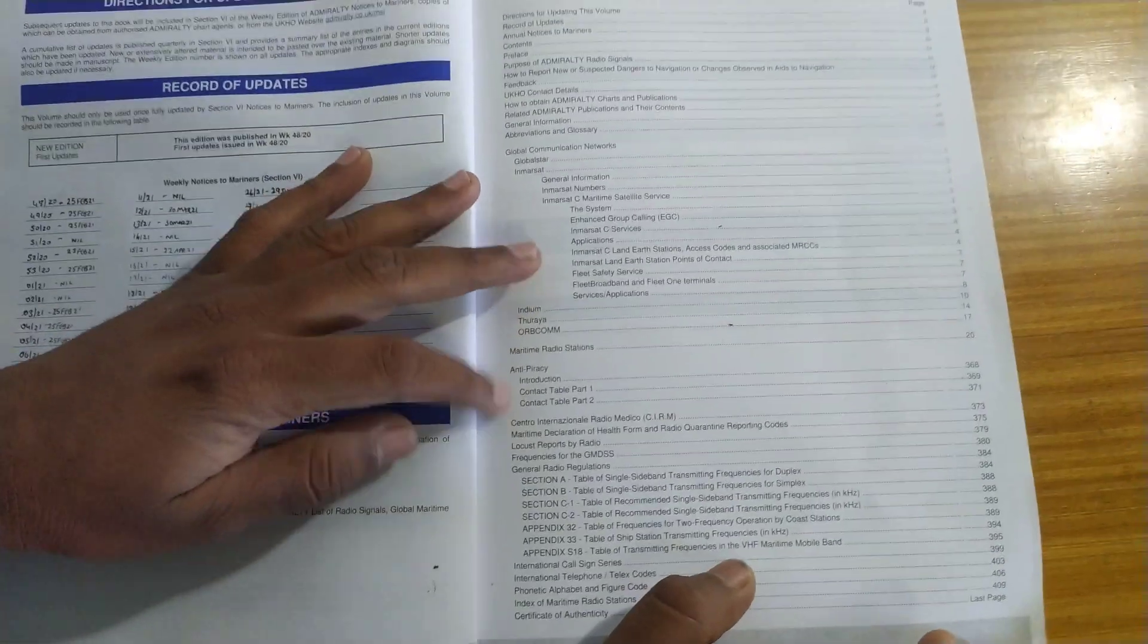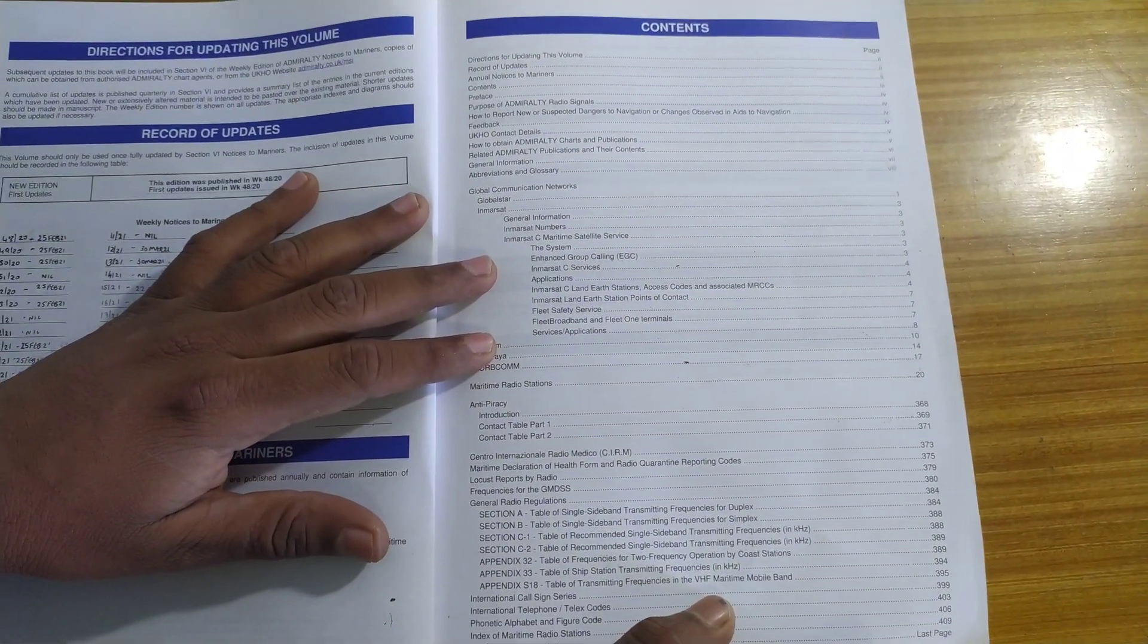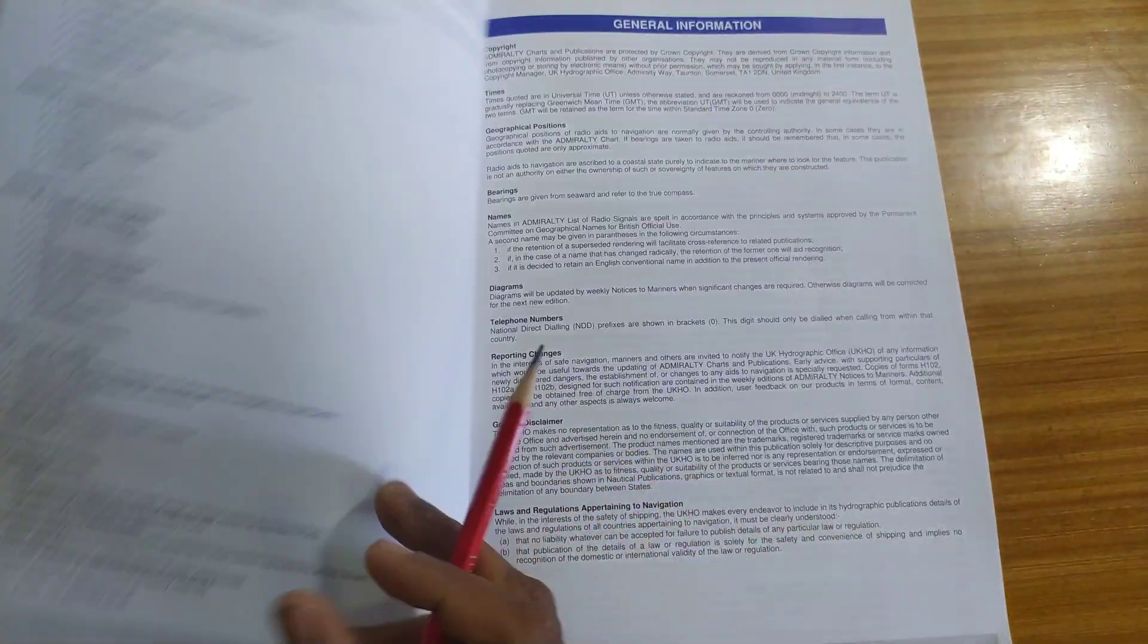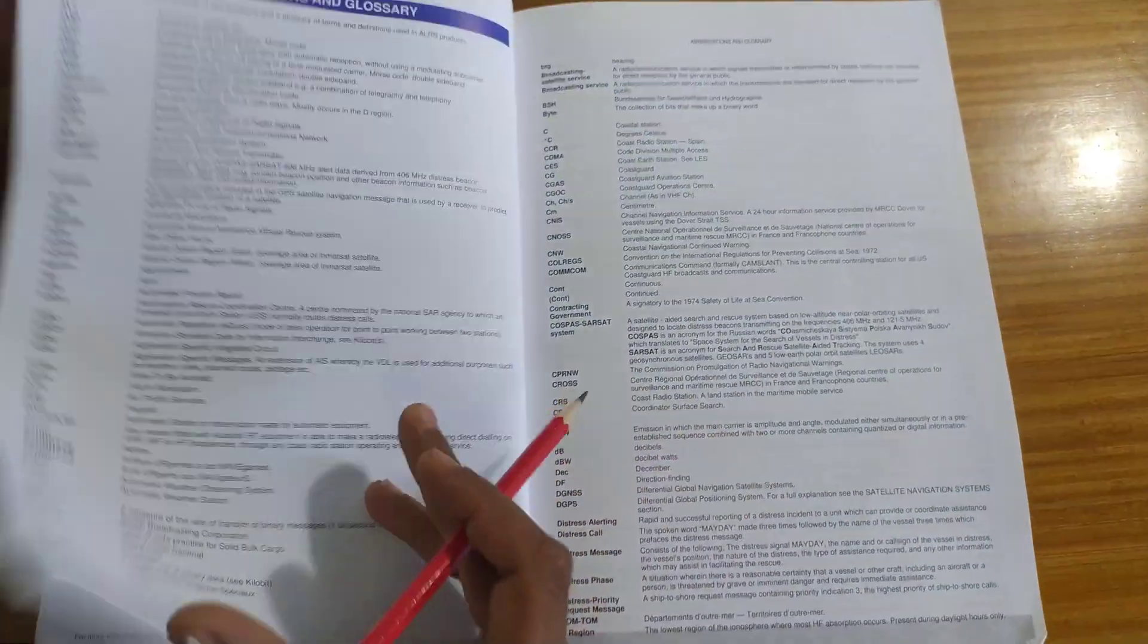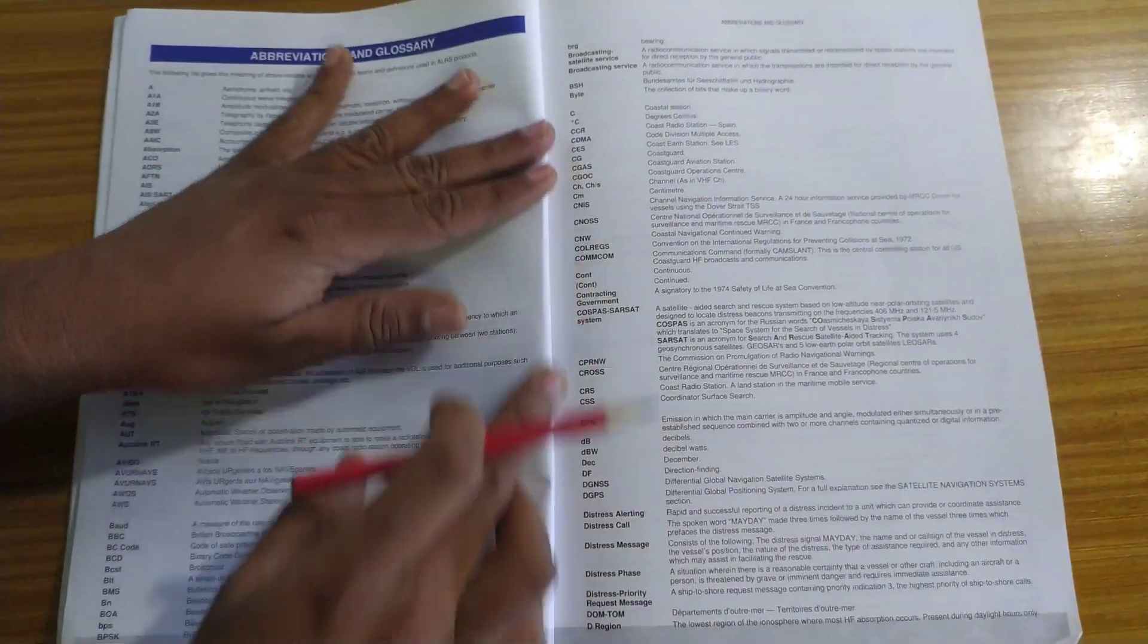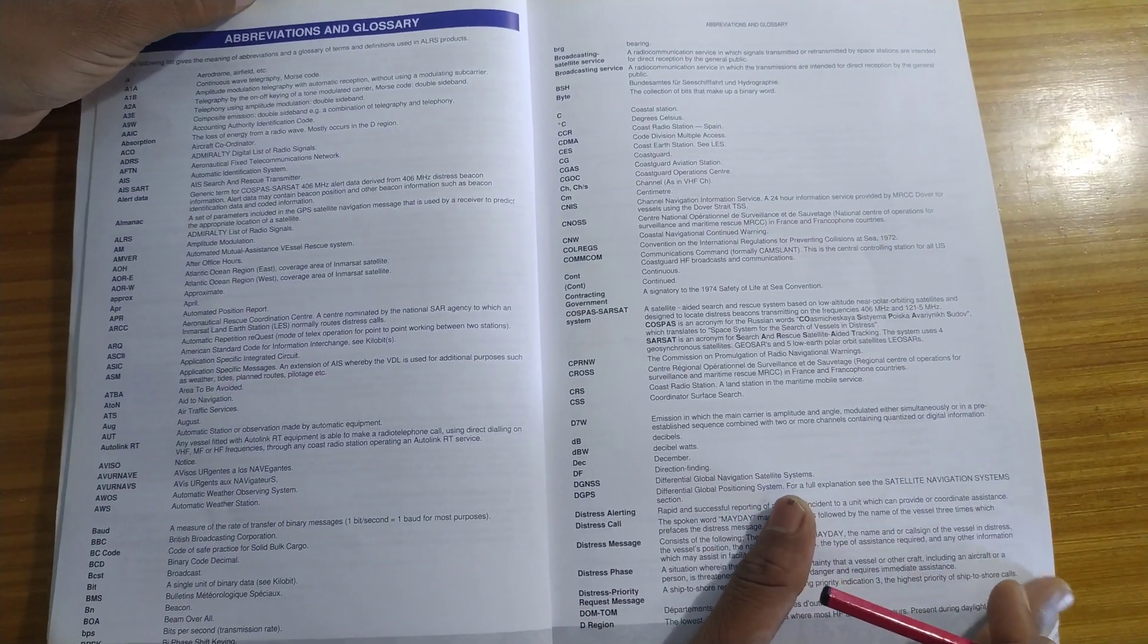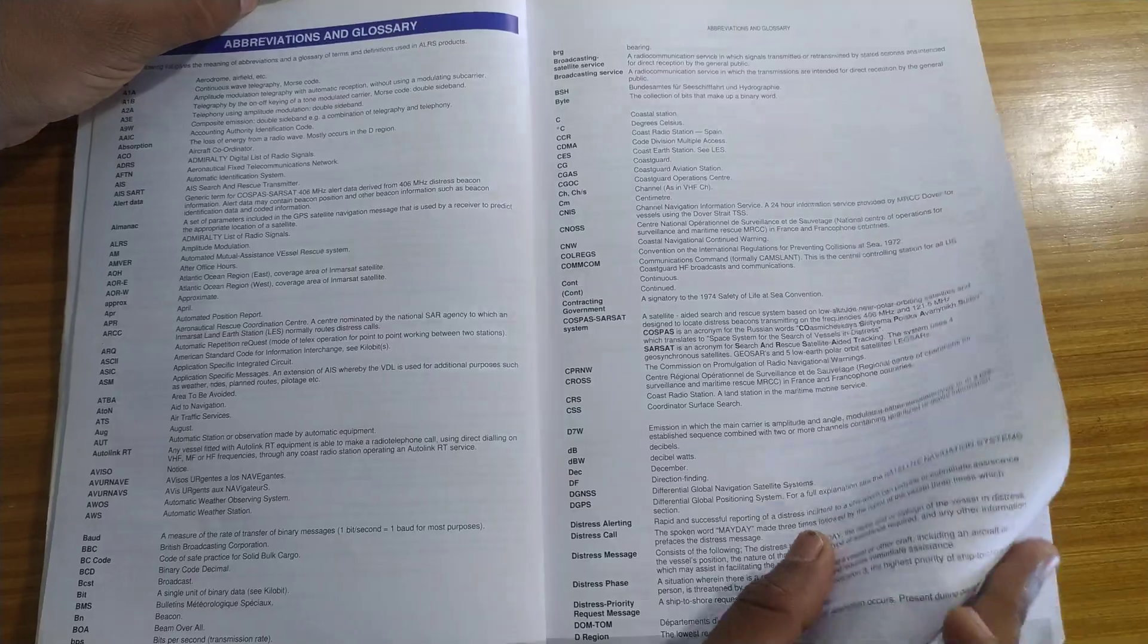Then comes the contents of this book. These are pages that are common to all books. Now comes the glossary and abbreviations, the terms that are used in this book.